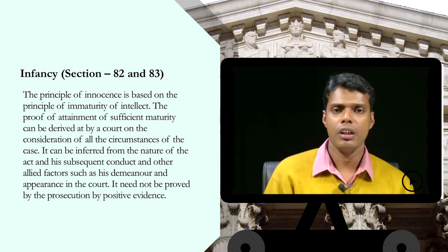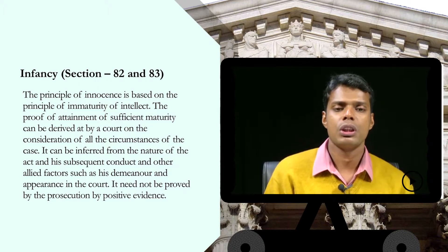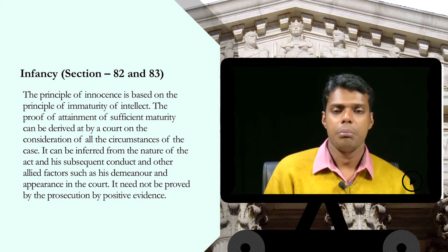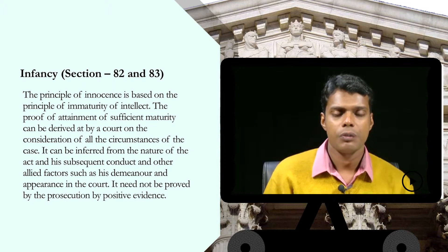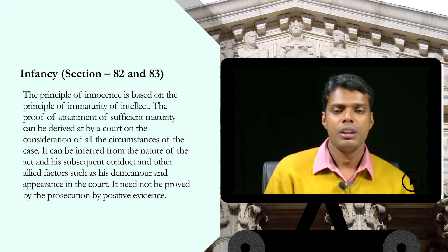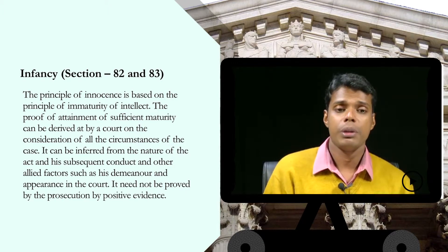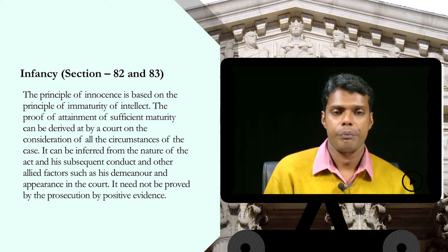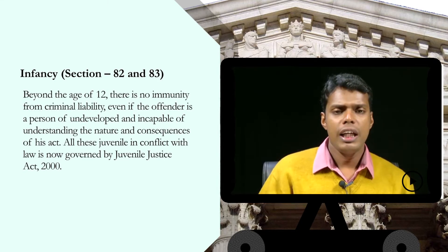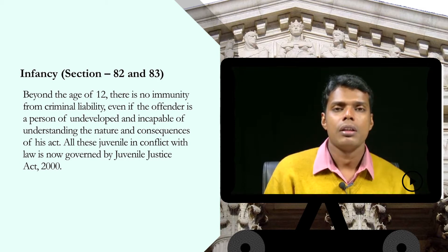The principle of innocence is based on the principle of immaturity of intellect. The proof of attainment of sufficient maturity can be derived by a court on consideration of all the circumstances of the case. It can be inferred from the nature of the act, subsequent conduct, and other allied factors such as demeanor and appearance in court. It may not be proved by the prosecution by positive evidence alone. Beyond the age of 12, there is no immunity from criminal liability, even if the offender is of undeveloped understanding.